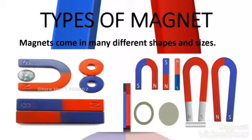The picture shows some examples of magnets in different shapes and sizes, such as horseshoe, bar, and ring magnets.